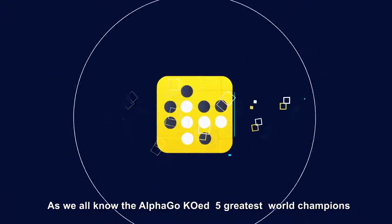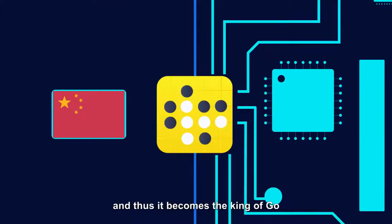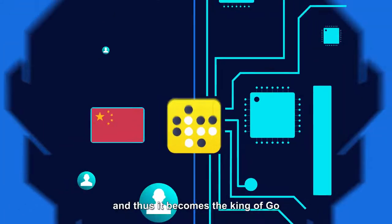As we all know, AlphaGo beat five greatest world champions, and thus it becomes the king of Go.